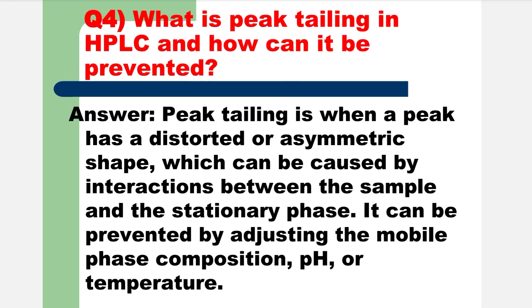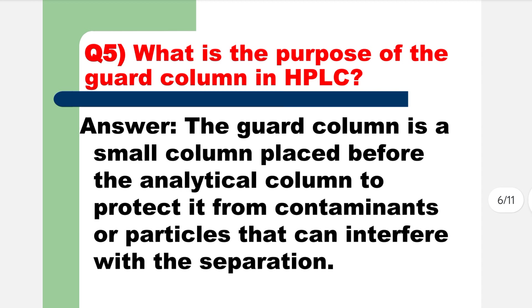What is peak trailing in HPLC and how can it be prevented? Peak trailing is when a peak has a distorted or asymmetric shape, which can be caused by interaction between the sample and the stationary phase. It can be prevented by adjusting the mobile phase composition, pH, or temperature.